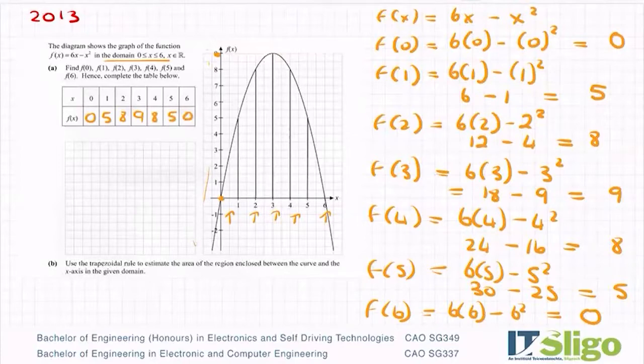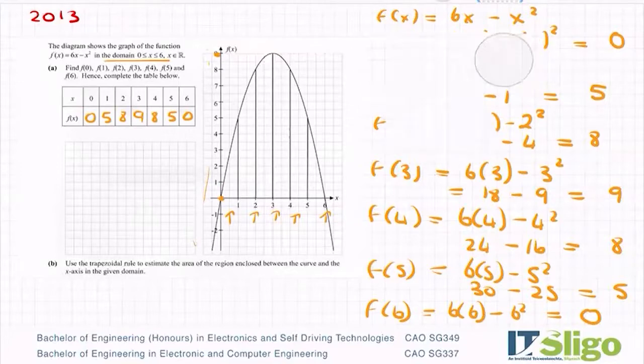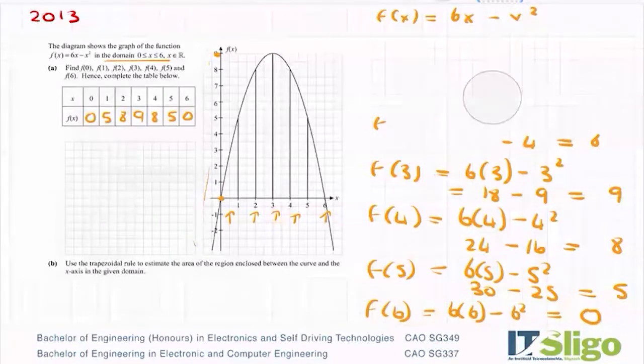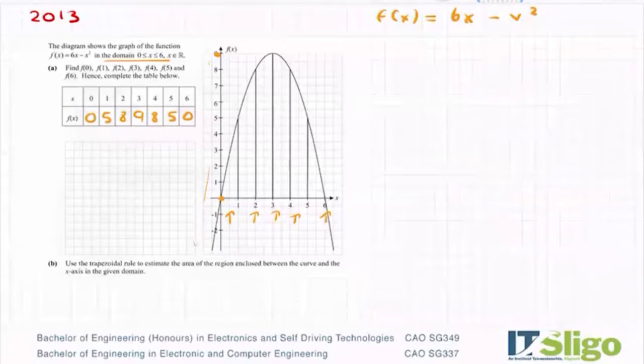So I am getting 0, 5, 8, 9, 8, 5, 0. So that was one way of doing it. Now, let me give you some options in case you didn't see that way. So of course, you could put into your calculator.